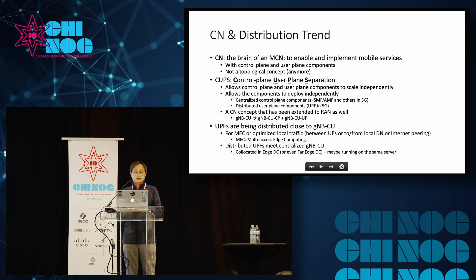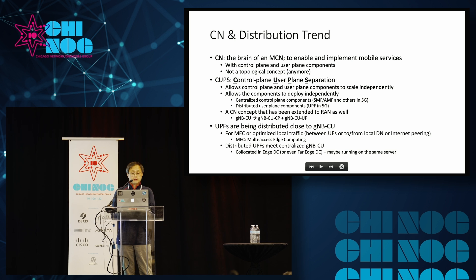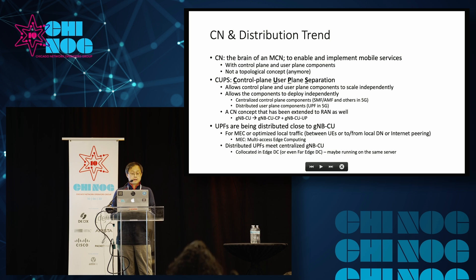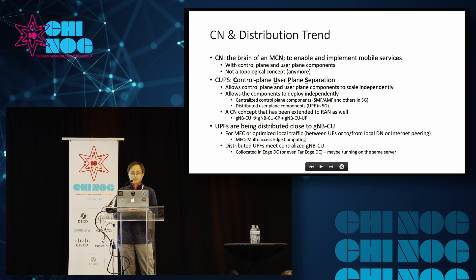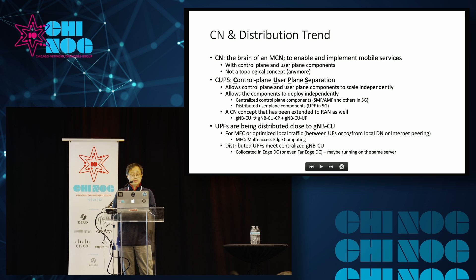The core network, or CN, is the brain of the MCN. Its purpose is to enable and implement mobile services. It has control plane and user plane components. I want to point out that RAN and core network are no longer topological concepts — they really focus on the functionalities of those components. It does not mean that the core network is in the core of your transport network and RAN is on the access part.